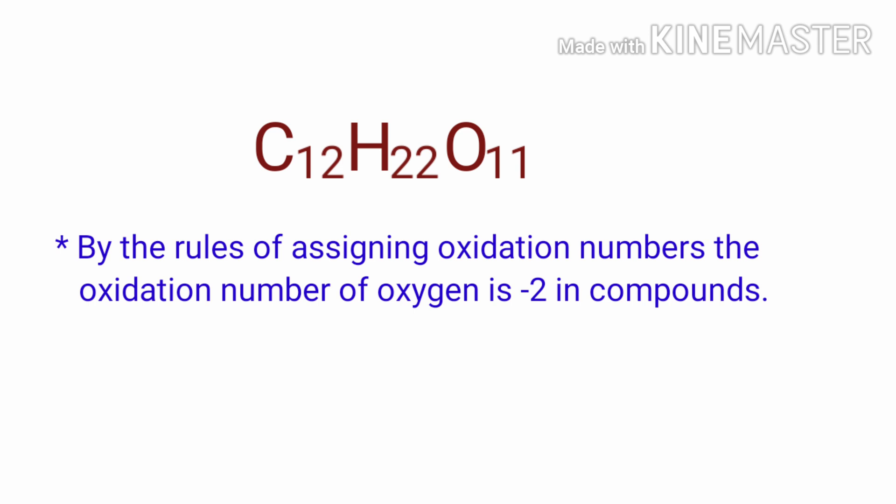By the rules of assigning oxidation numbers, the oxidation number of oxygen is minus 2 in compounds. We can write the oxidation number of the element above its symbol and the total number of the oxidation number of the atoms below its symbol.